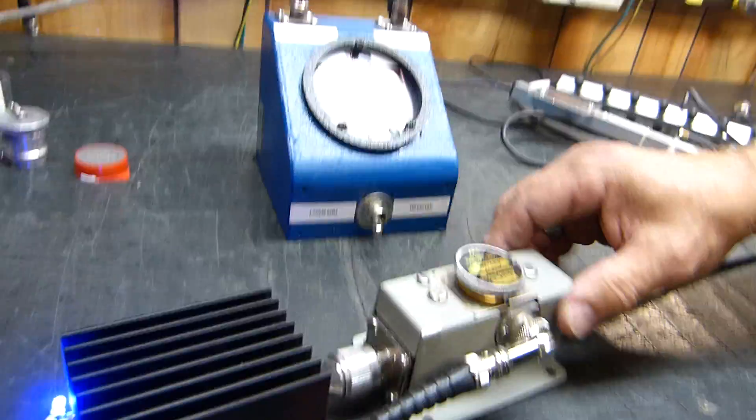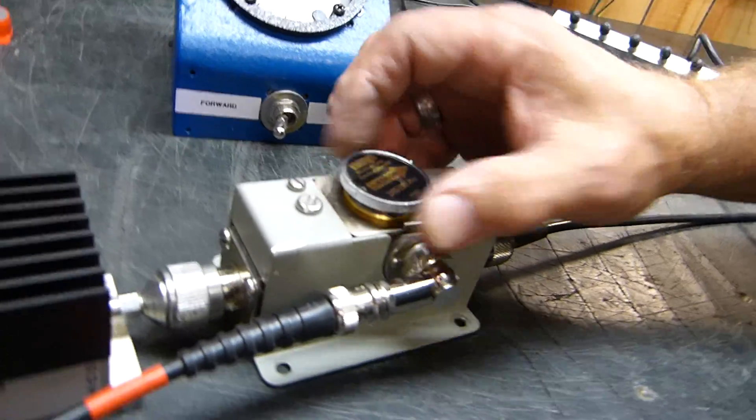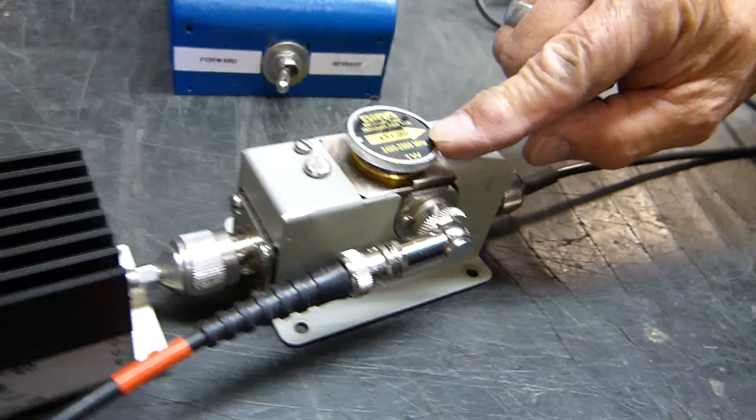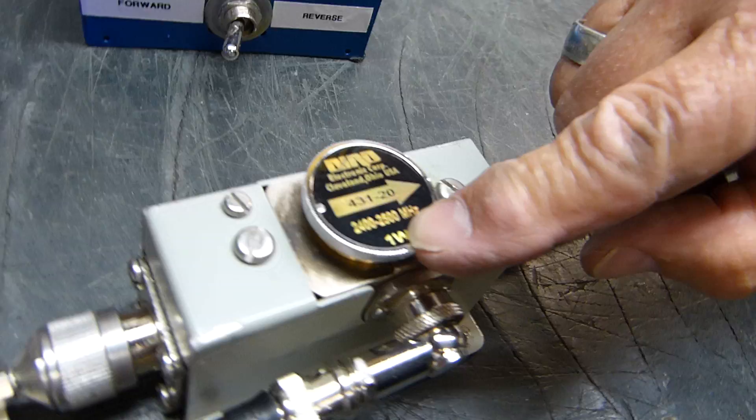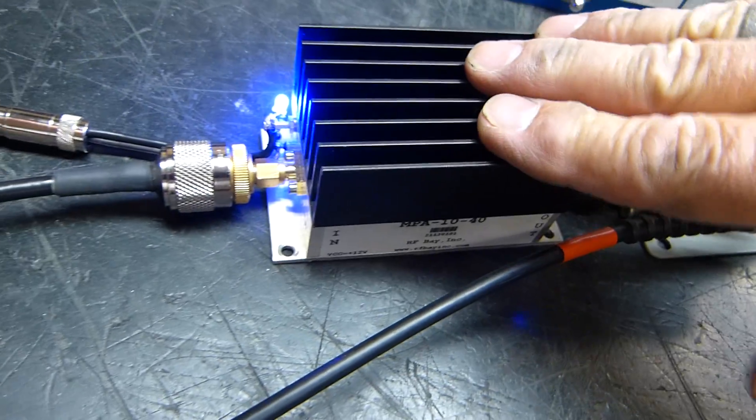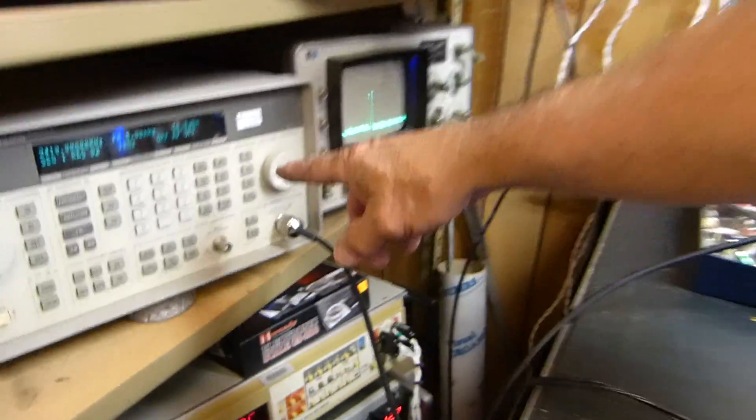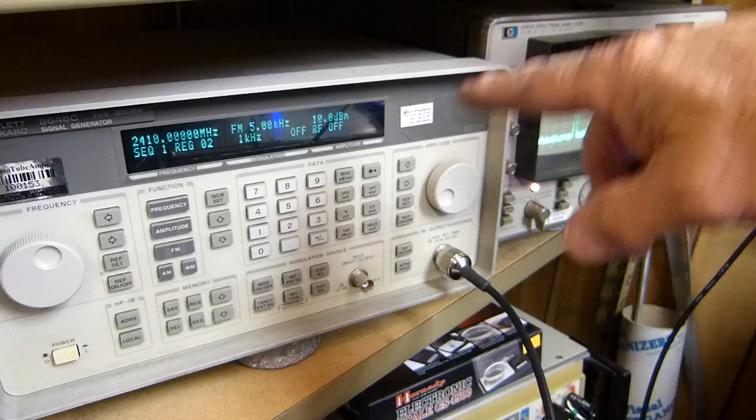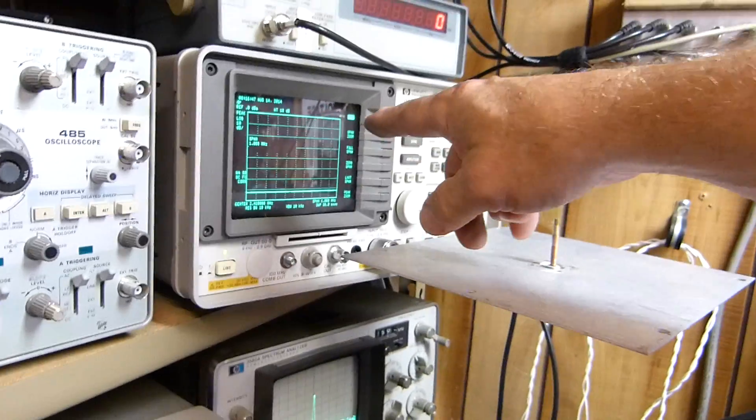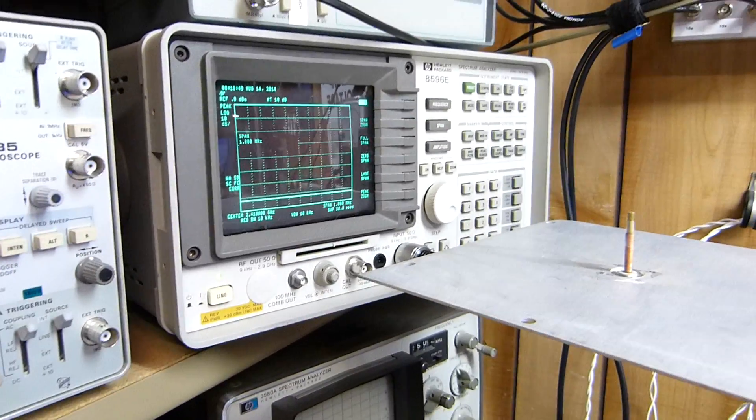But right now that's what it is. Now, what I'm using here—I think you've all seen before if you've seen my videos—this is a Bird line section with a 2.4 to 2.5 gigahertz one watt element. I use a little broadband amplifier over here. I drive it with this HP signal generator, and we watch it here on this spectrum analyzer.